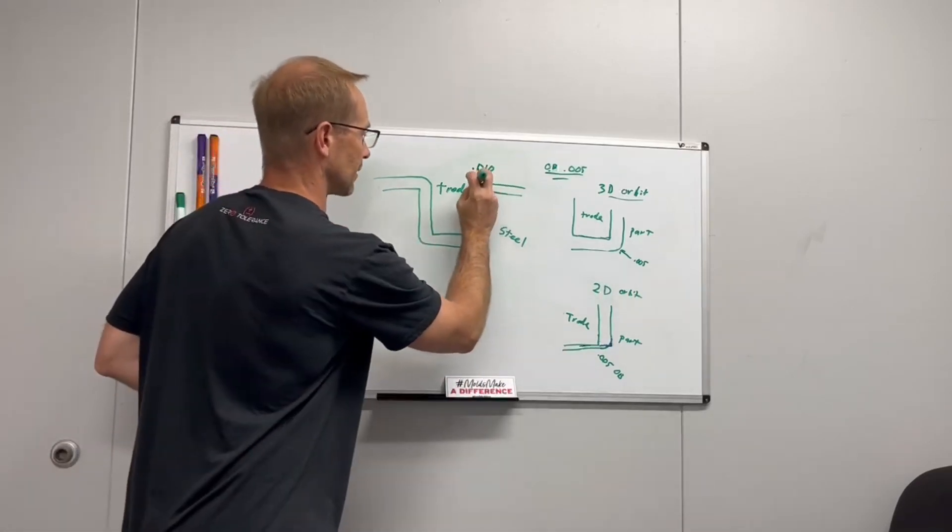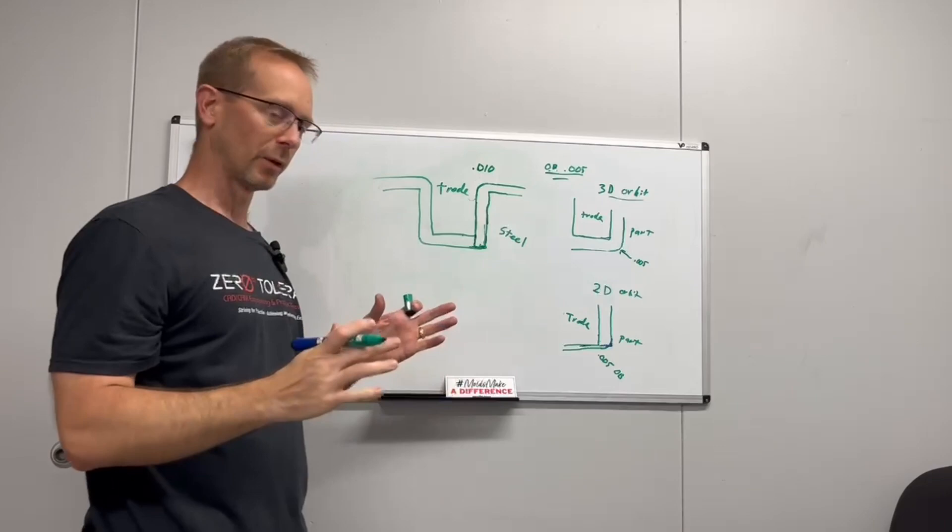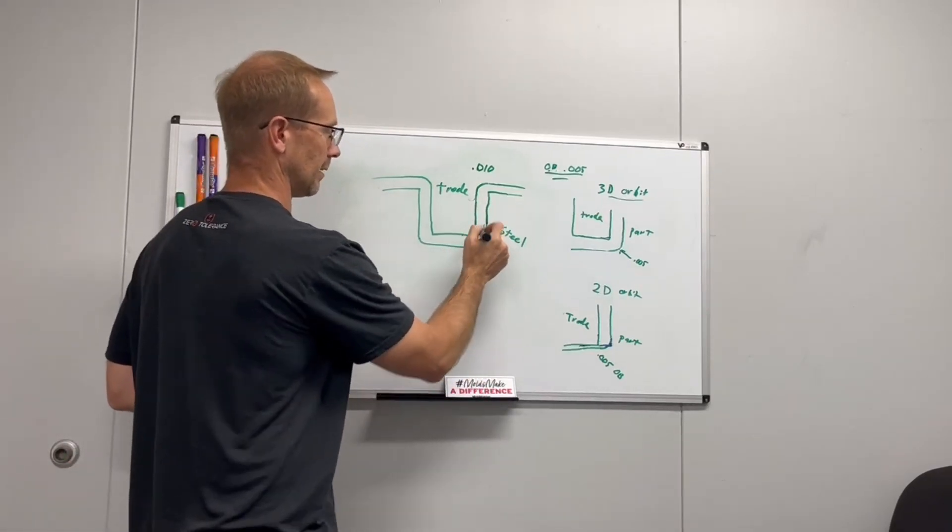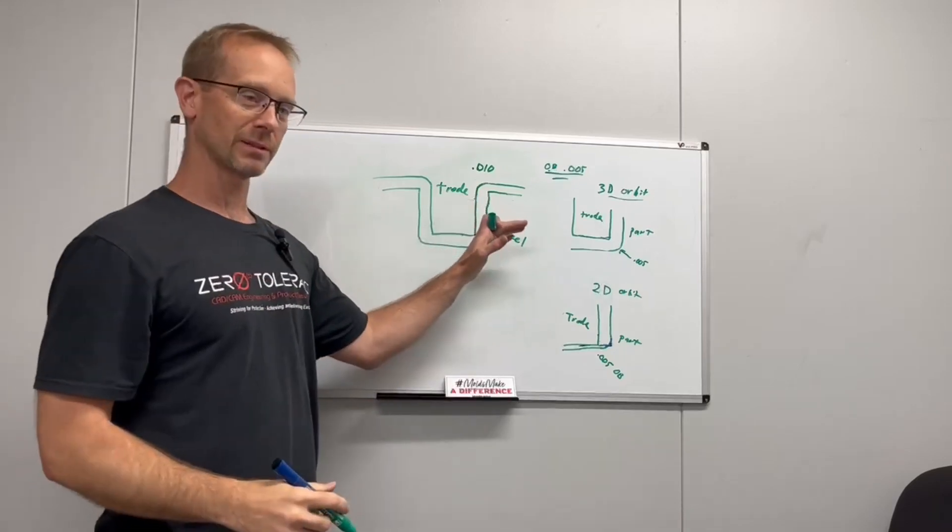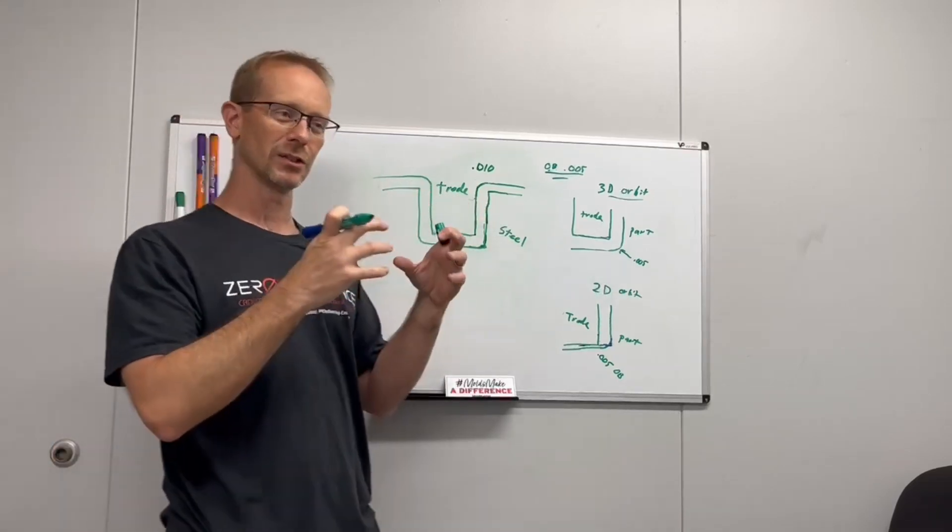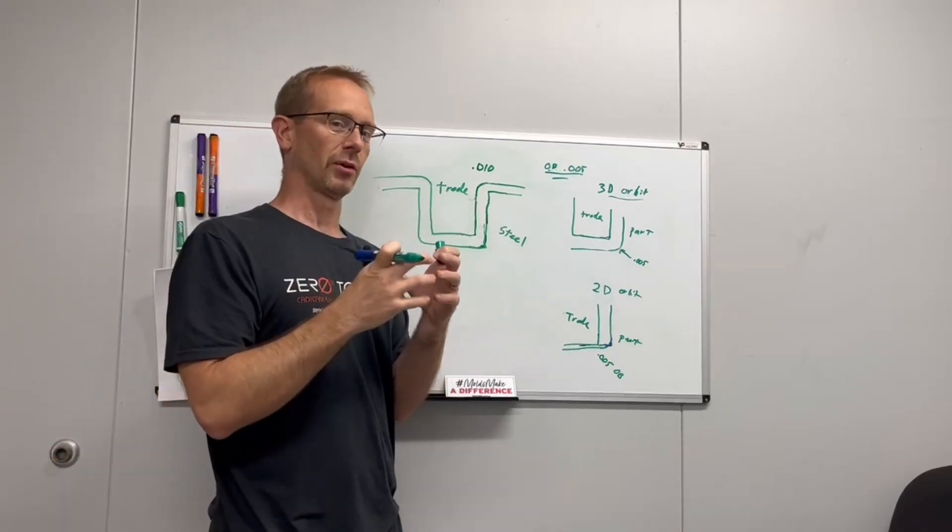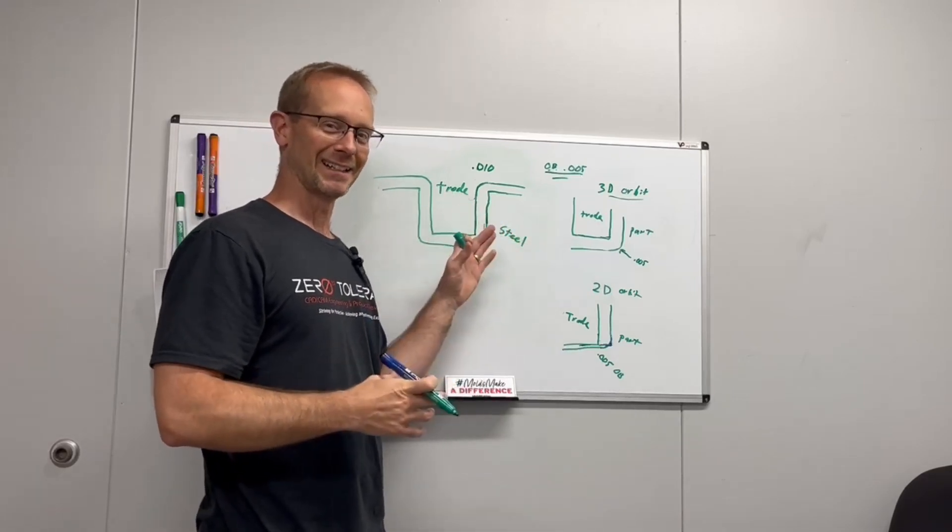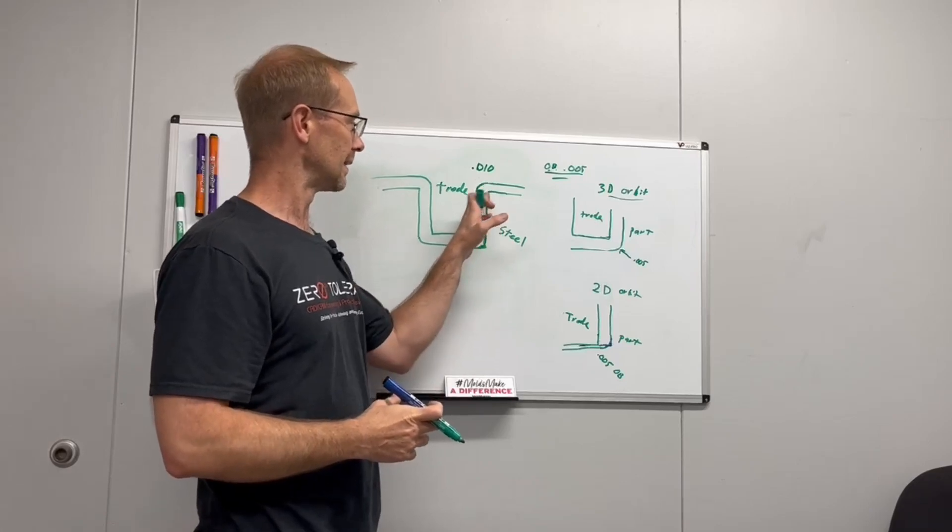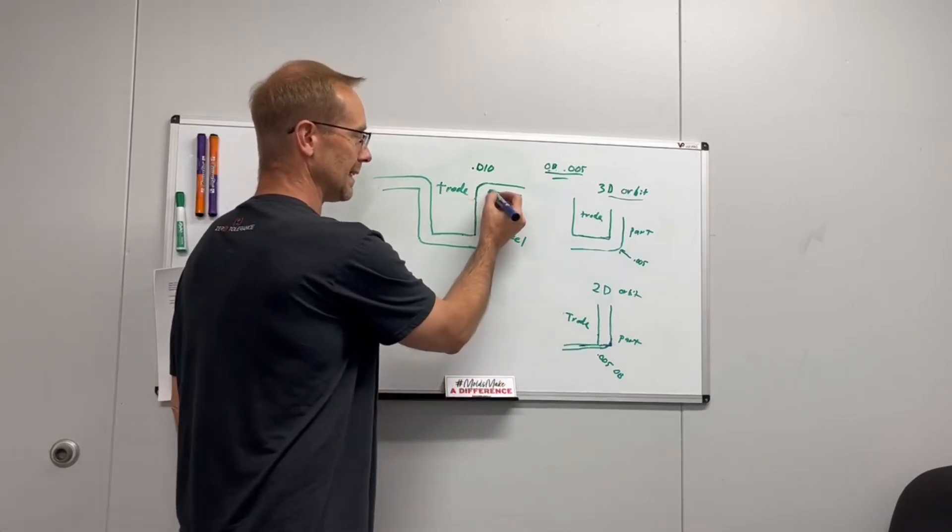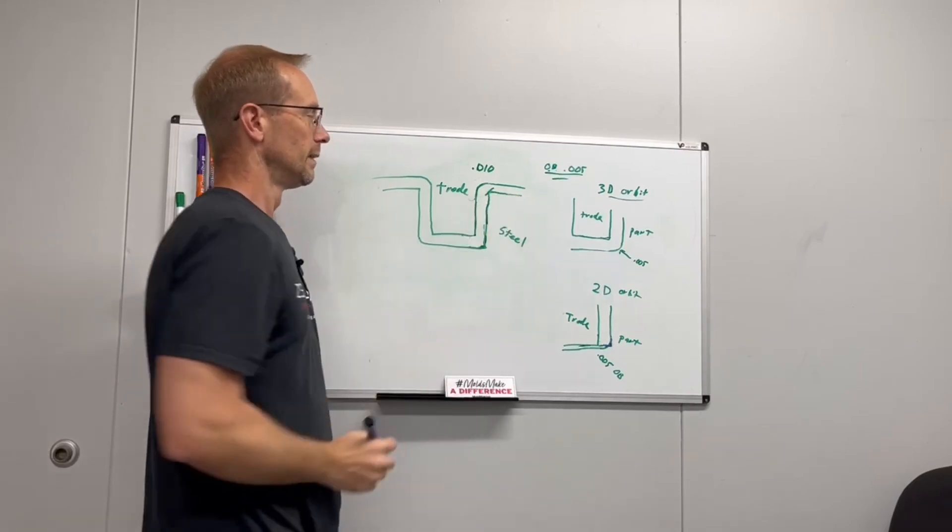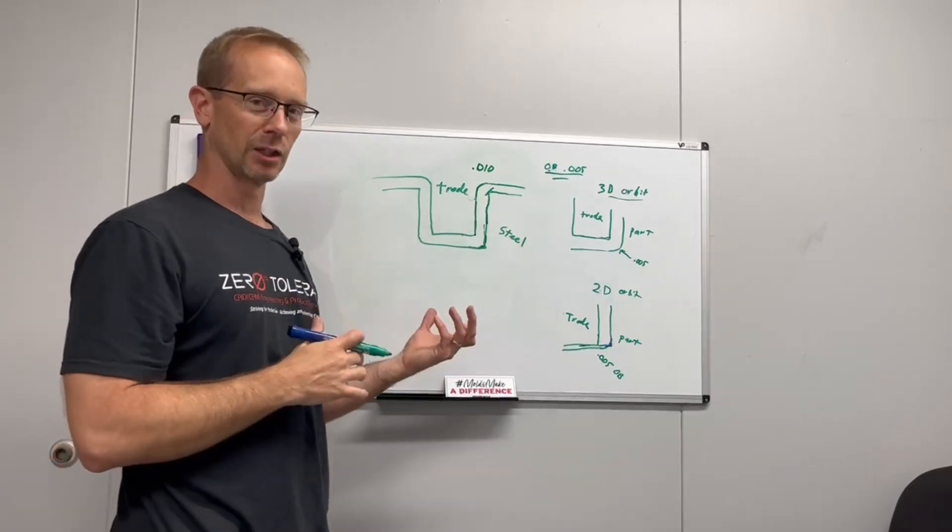If we have our electrode correct, and we're doing 3D orbit like we're supposed to, what happens is we call this area, when it's burning, it kind of traps the debris, the sparked tiny particles. They end up being a black, which we call a schmutz, inside that pocket, and it ends up getting into this area. And what can happen, even if you have this done correctly, you could still roll this corner if it's not getting a good flush in there.